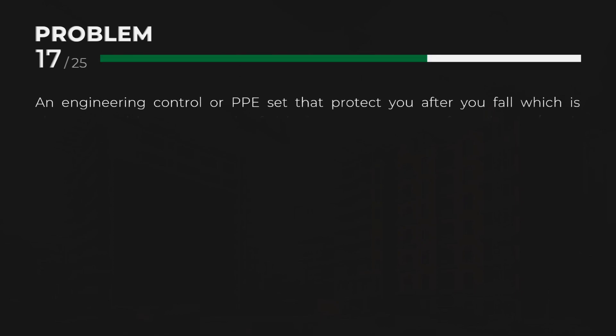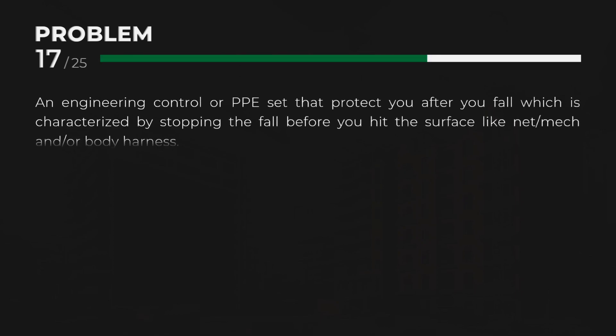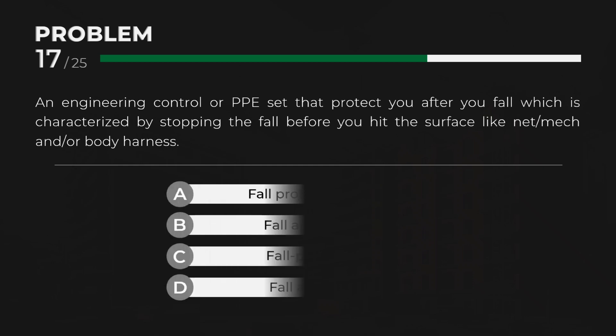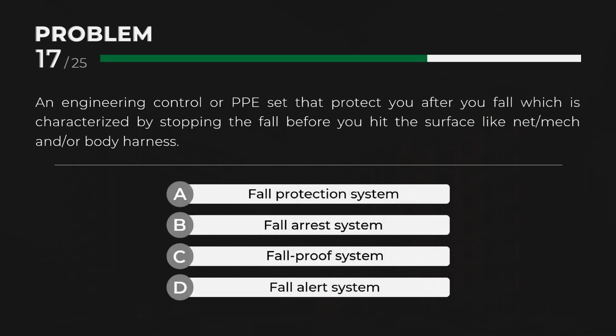B. Fall Arrest System — An engineering control or PPE set that protects you after you fall, characterized by stopping the fall before you hit the surface, such as nets, mesh, and/or body harness.